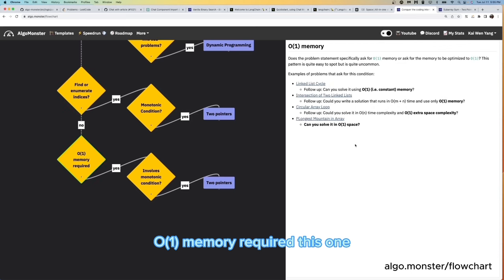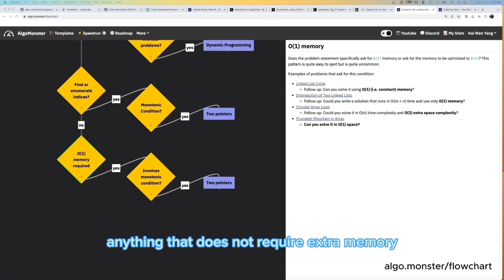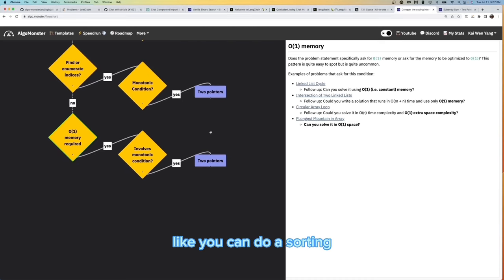One memory required, this one is very obvious, but also pretty rare. That just means in the description, it says use constant memory. So they don't want you to use an actual data structure, like a HashMap or anything. Exactly. And this can also happen during an interview. For example, the interviewer might say, oh, can you optimize this to use constant memory? And that's where you would go through this branch and go to two-pointers. One thing we should also mention is that binary search also uses constant memory. However, most of these problems where they ask to use constant memory use two-pointers. That's something you should also consider. Right. Essentially, anything that does not require extra memory, like you can do a sorting. Basically, you have pointers on things. You don't want to create extra things. Exactly.